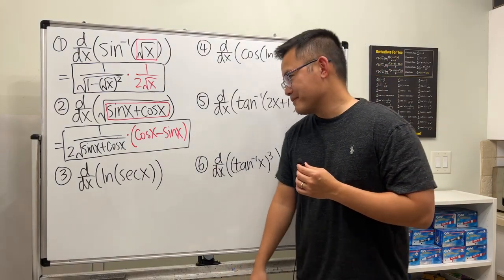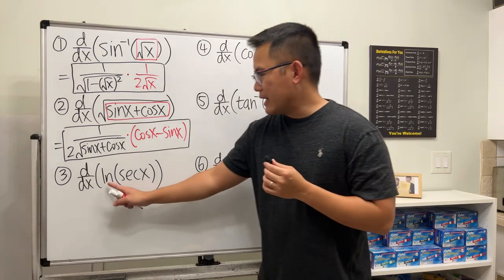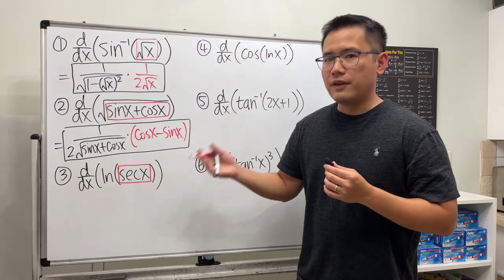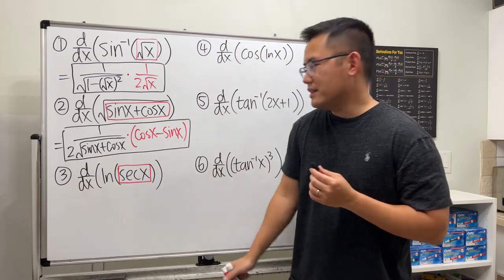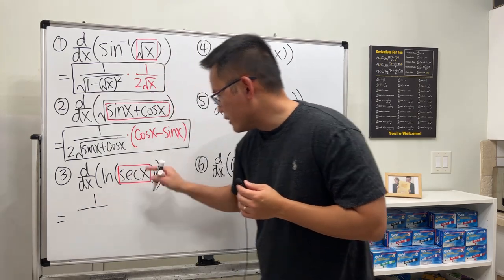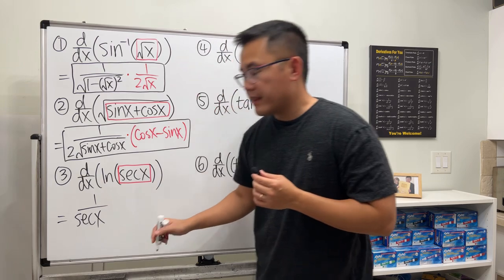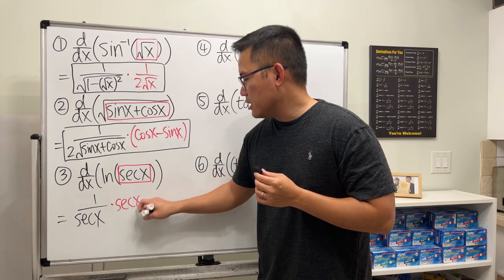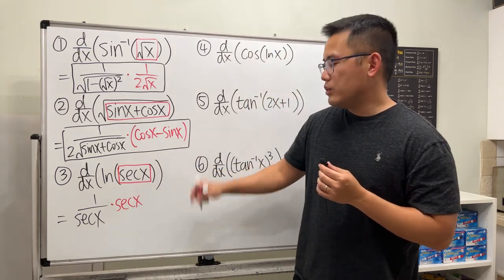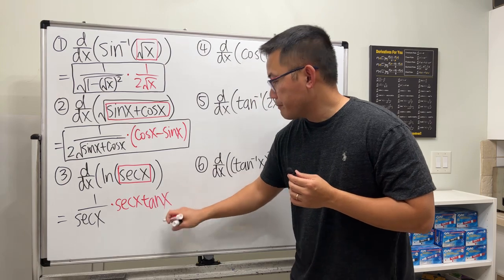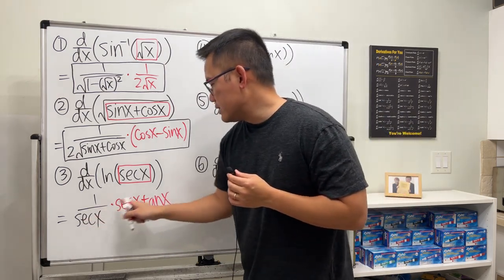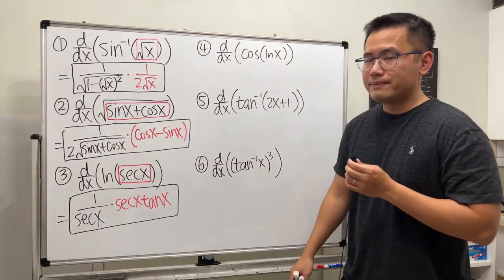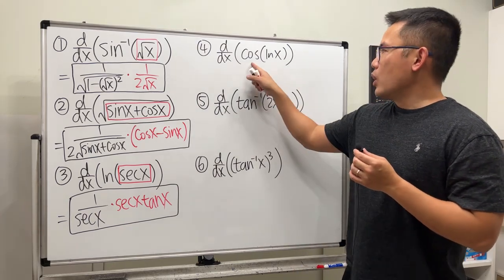Next we have natural log of secant x. It's the natural log of a box, so the derivative of natural log of a box is 1 over the box. We first have 1 over secant x, then multiply by the derivative of the box. The derivative of secant x is secant x times tangent x — it repeats and you multiply by its best friend, tangent x. We can cancel the secant x, but I'll leave that to you.